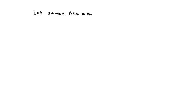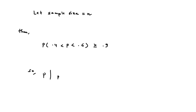In this problem, let sample size equal to n. Then I can write the expression as p(0.4 < p̂ < 0.6) ≥ 0.9, so p(|p̂ − 0.5| < 0.1) ≥ 0.9.